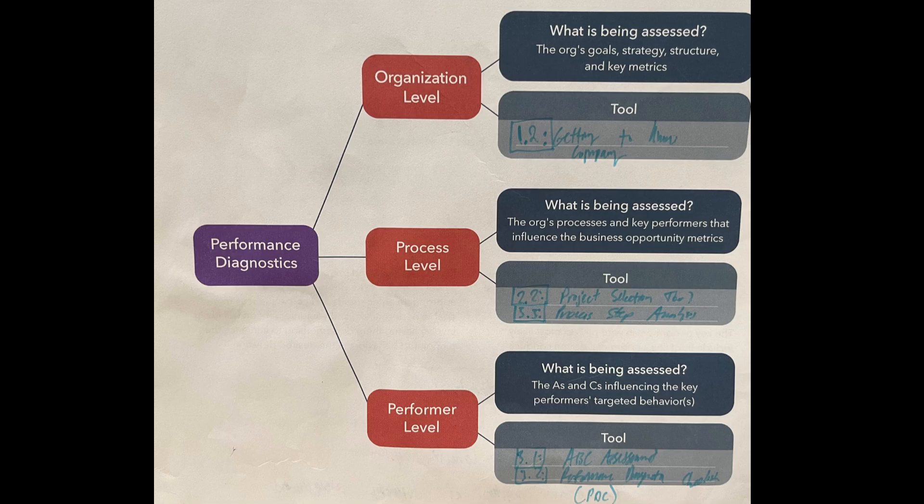The second level is the process level. In this system, we are assessing the organization's current processes and key performers that influence the business opportunity metrics — I made a video on that earlier this week, so I highly suggest you go check that out. From there, you make your way down to the performer level, or individual level.